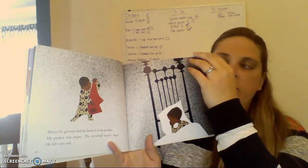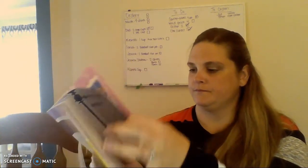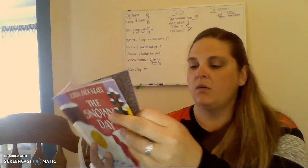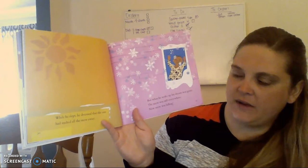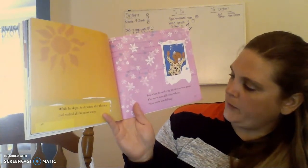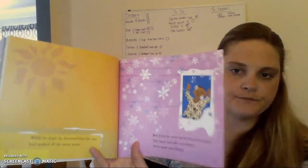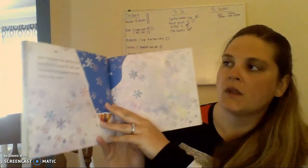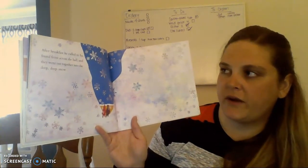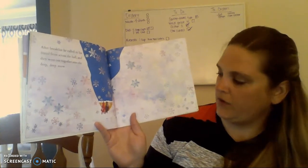He felt very sad. What happened to that snowball? While he slept, he dreamed that the sun had melted all the snow away. But when he woke up, his dream was gone. The snow was still everywhere. New snow was falling. After breakfast, he called to his friend from across the hall, and they went out together into the deep, deep snow.